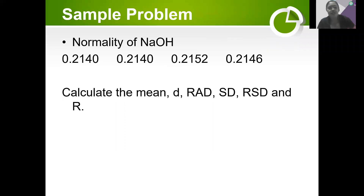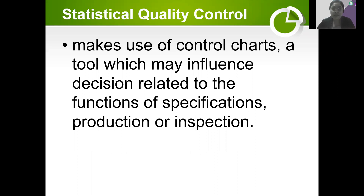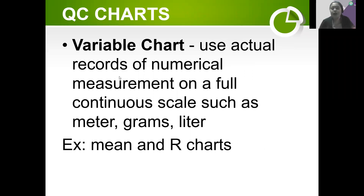That's it for statistics — this is just a review. We need statistical tools in QC to process our numerical data, analyze and interpret them. Aside from these tests, we also use charts and graphs in presenting data collected in the QC laboratory. These also help in decision-making for our product during inspection — whether the products fit into the standards and specifications or not, as seen in the graphs or control charts. For QC charts, we have two types: the variable chart and the attribute chart. The variable chart records all numerical data as-is.